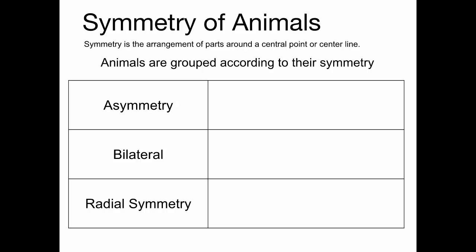Asymmetry means no symmetry — no real pattern. The prefix 'a' means 'not.' You couldn't draw a line anywhere on that organism dividing it into equal parts. Here is a shape that is asymmetrical.